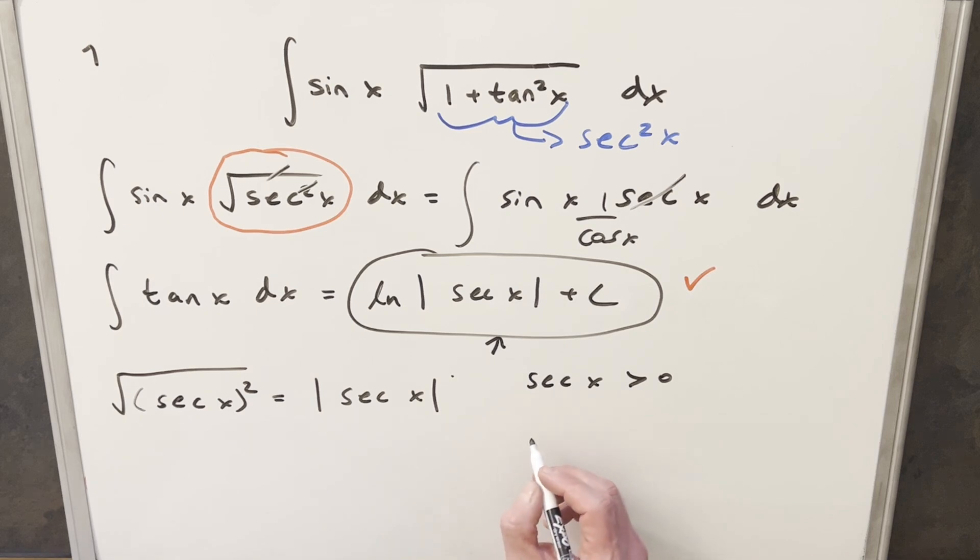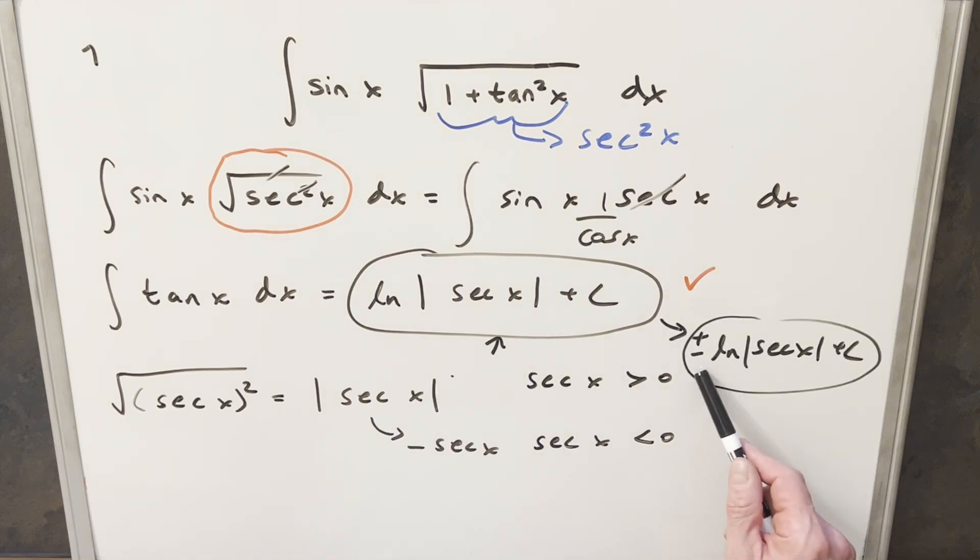But the trouble is, in the case where secant of x is less than zero, which is the second and third quadrants, then this actually becomes minus secant of x. So what I've done in the past is written my solution with a plus minus in front to cover these two cases. But in past videos, people have pointed out this is not really complete, because even though it tells us it's positive and negative in some places, it doesn't tell us where. So it's sort of lacking something.